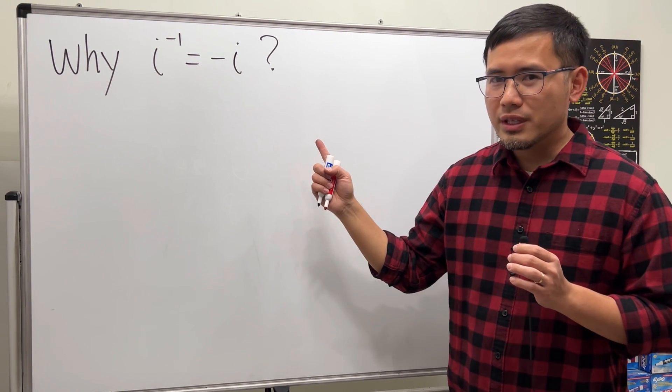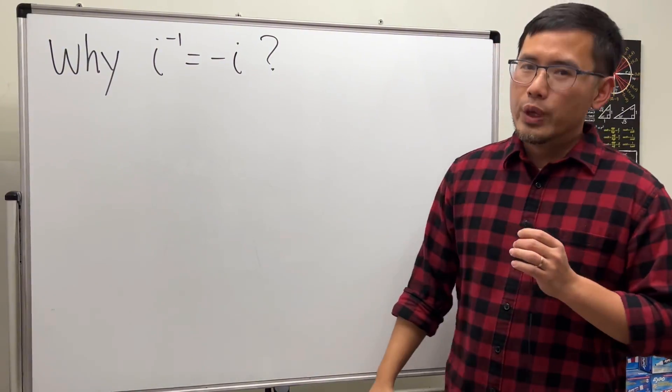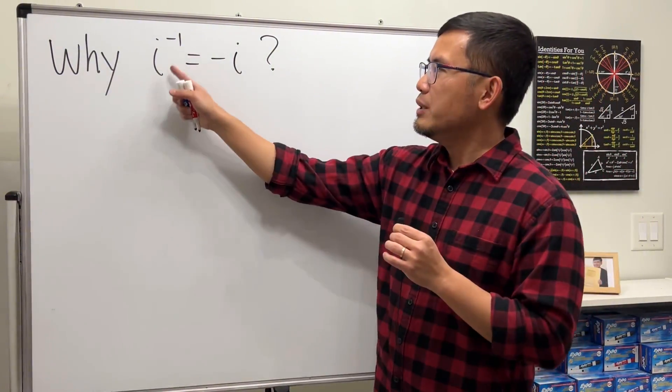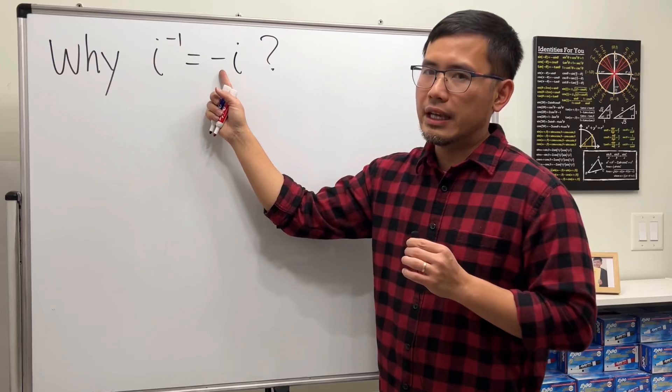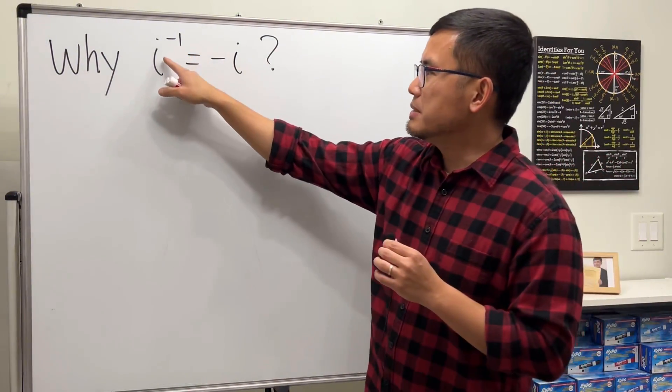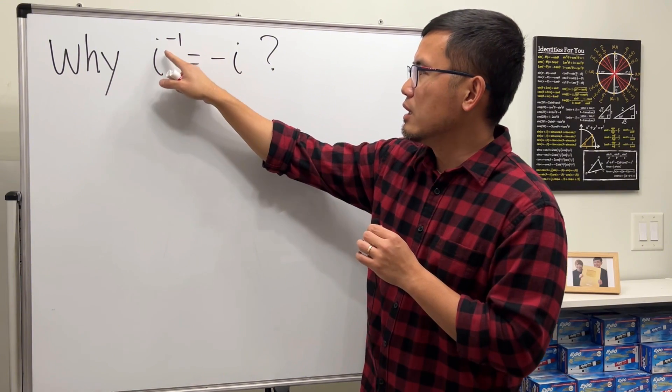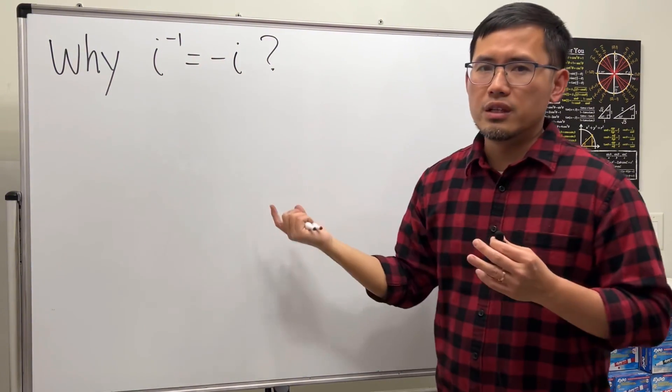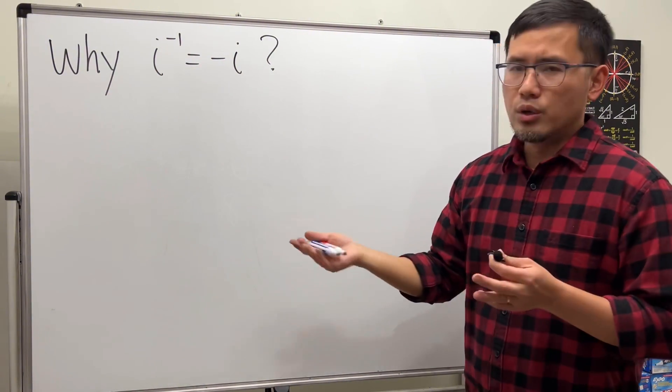I saw this interesting question on Reddit. We would like to know why is i to the negative 1 equal to negative i? I think this is really nice looking because it seems that we're just multiplying i times negative 1 and we get negative i. But this is not true for all numbers.